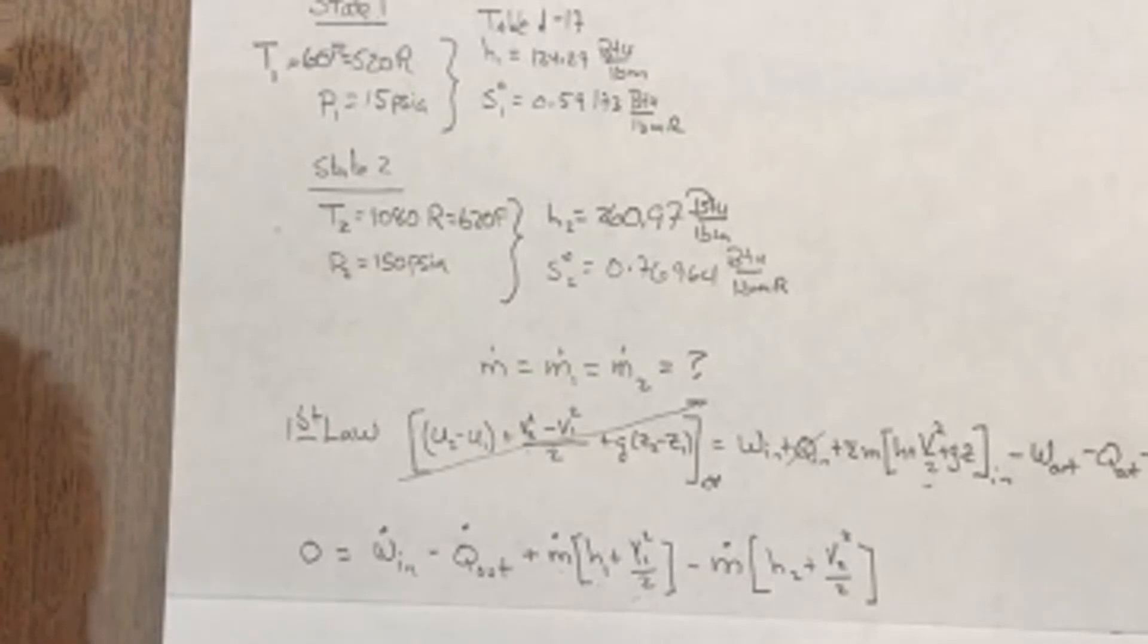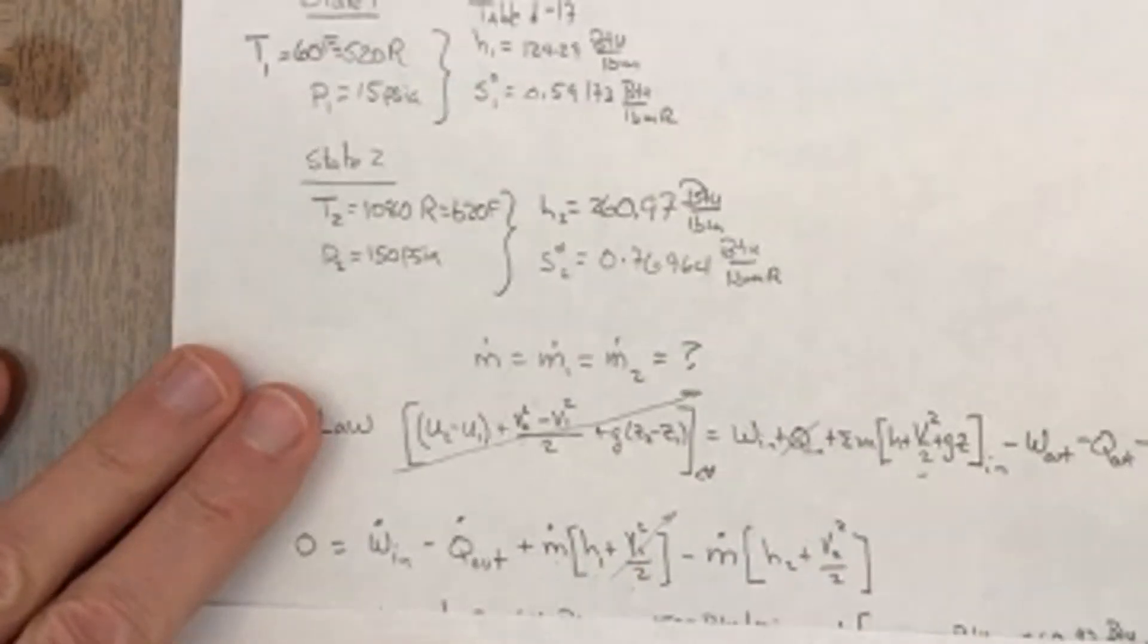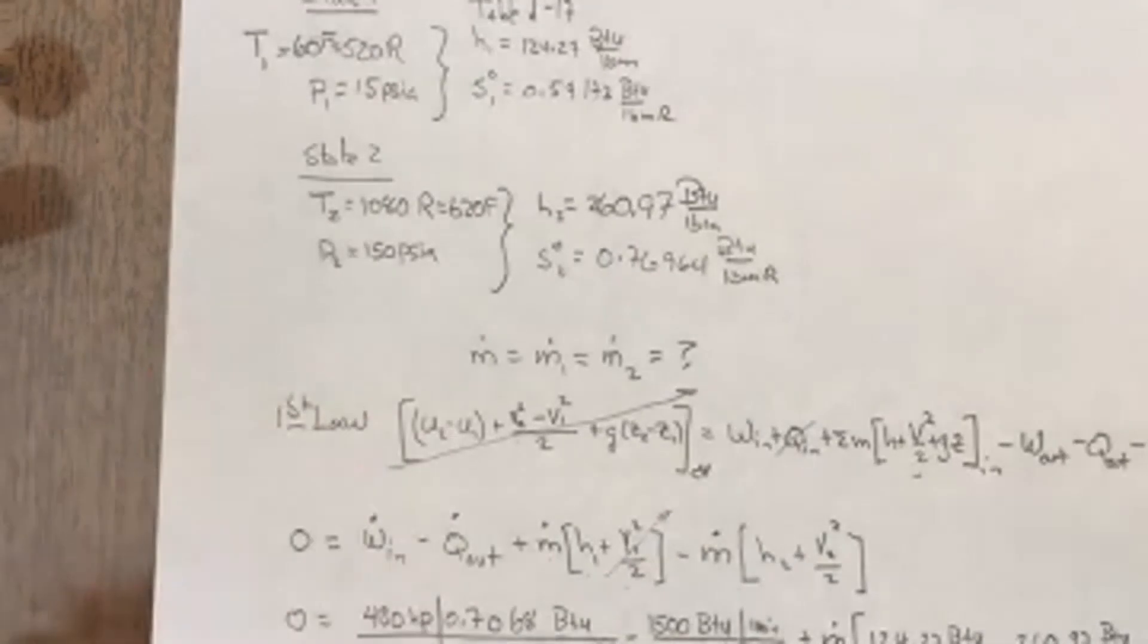Now I suspect that it's going in at low velocity, so I suspect that this is going to be close to zero or small. So I'm going to neglect that actual kinetic energy going in. I'm just going to account for the kinetic energy coming out.